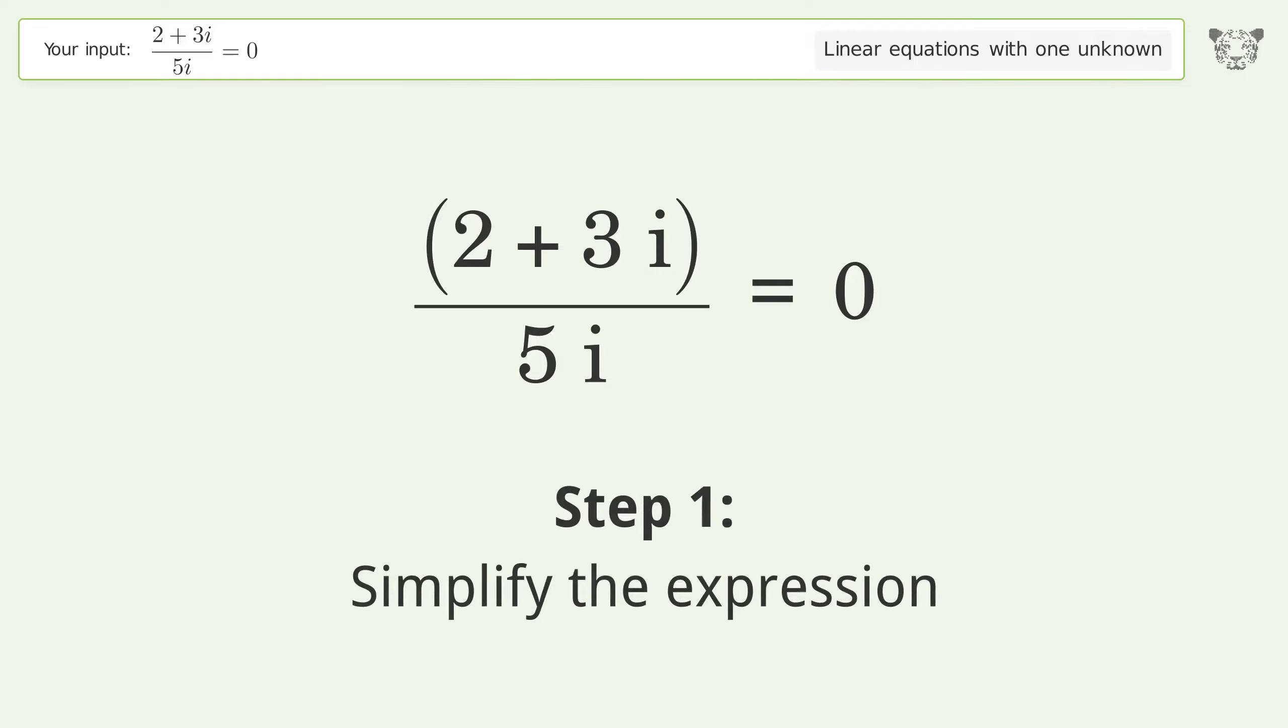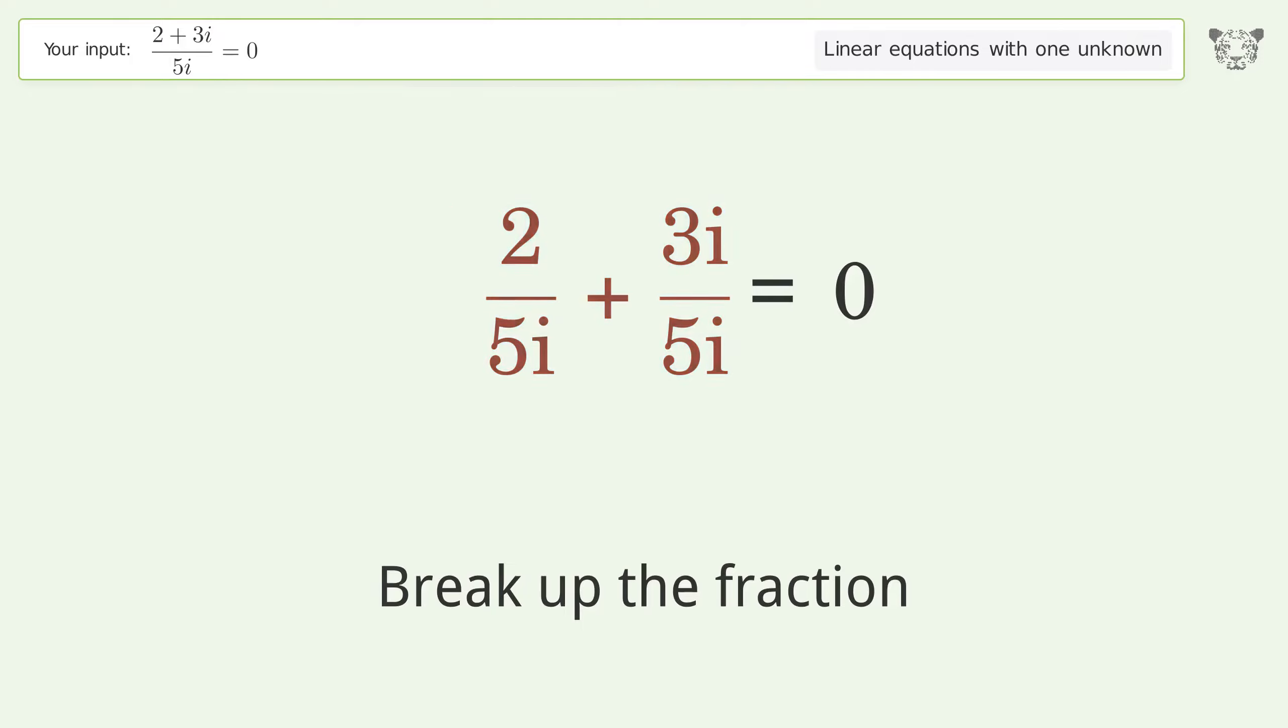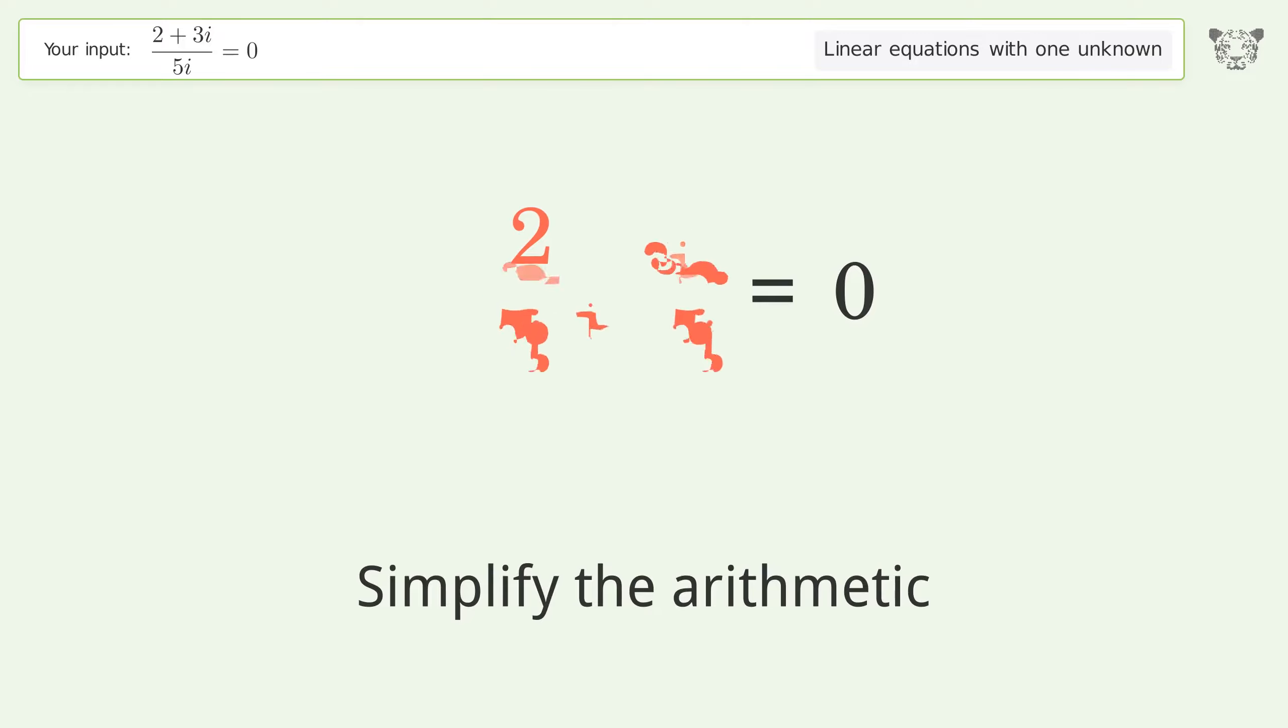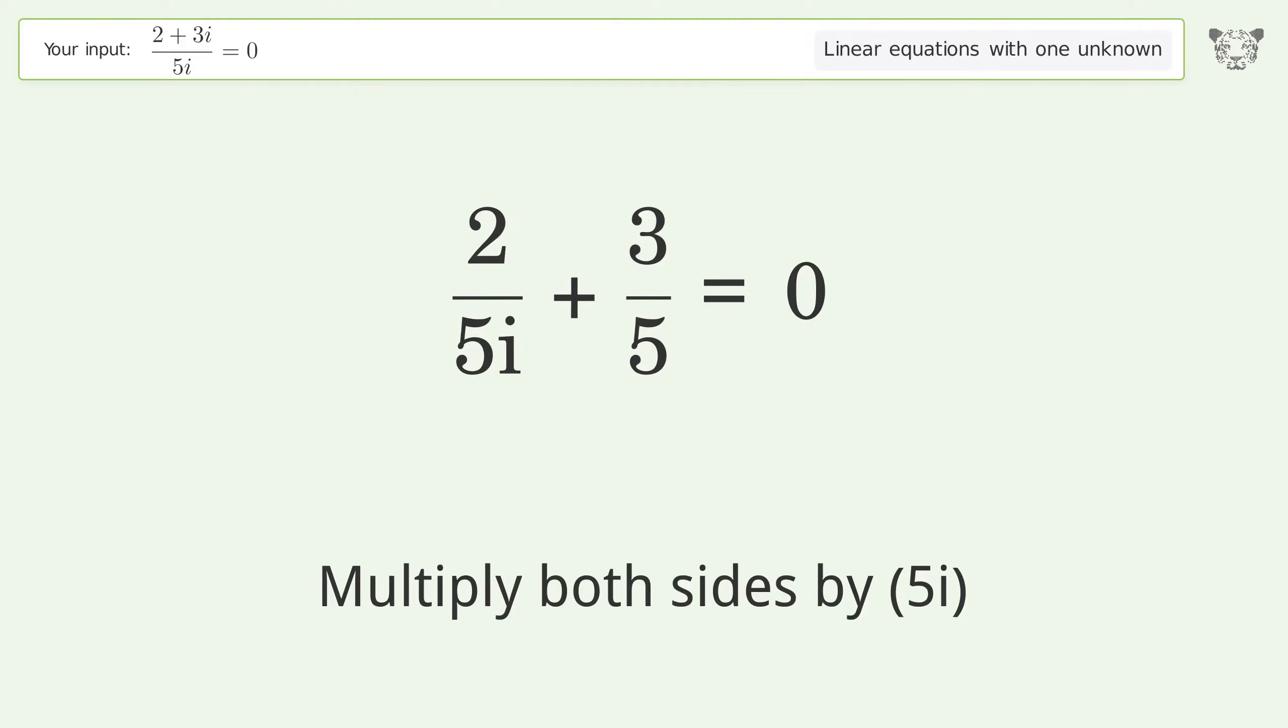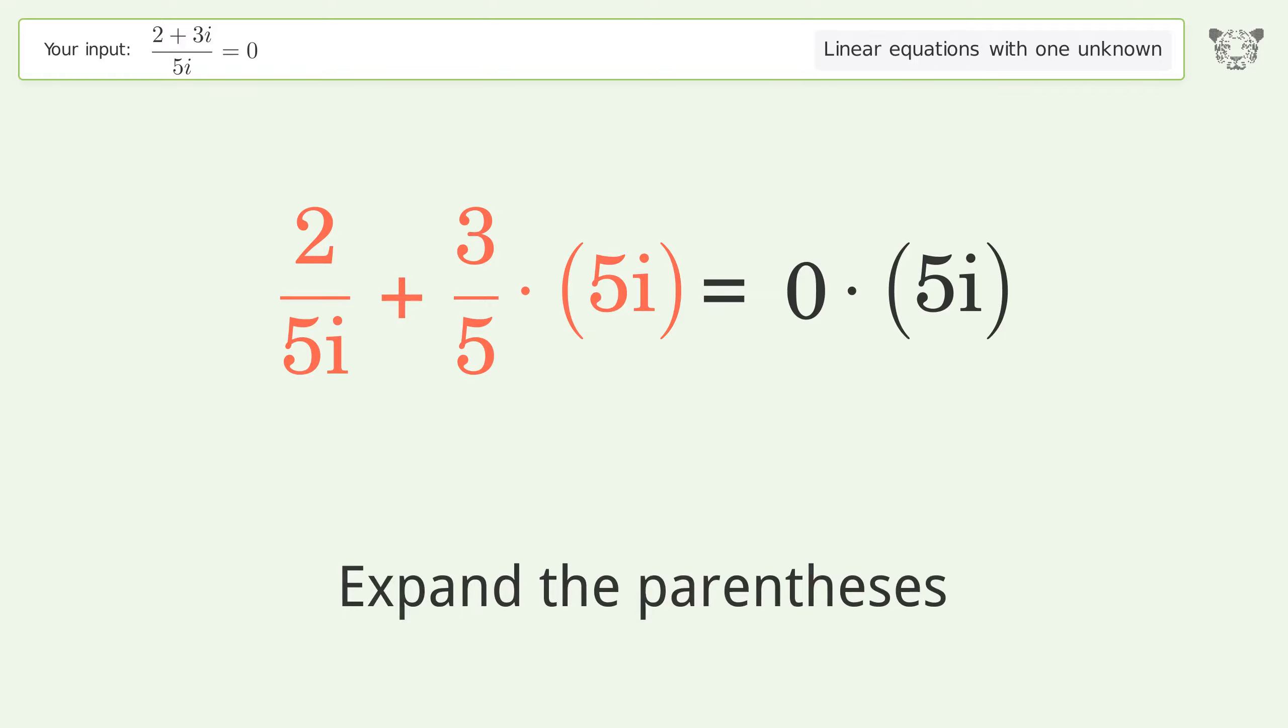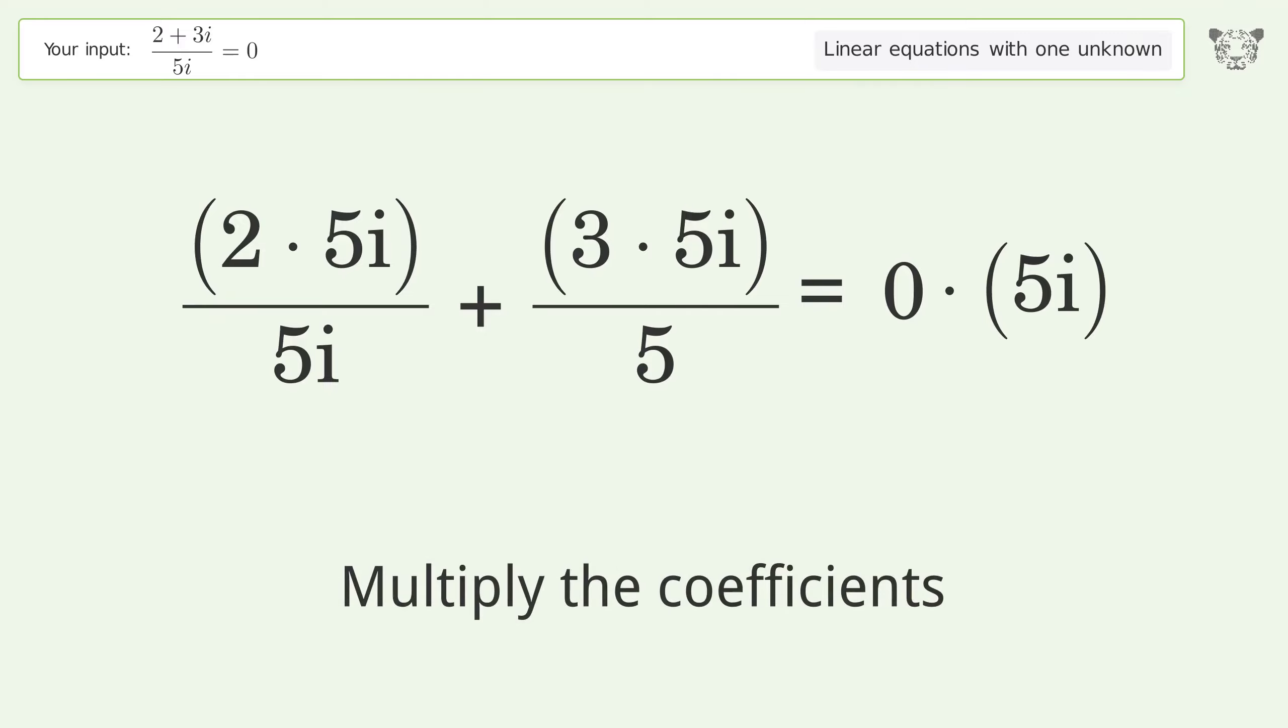Simplify the expression. Break up the fraction. Simplify the arithmetic. Isolate the i. Multiply both sides by 5i. Expand the parentheses. Multiply the coefficients.